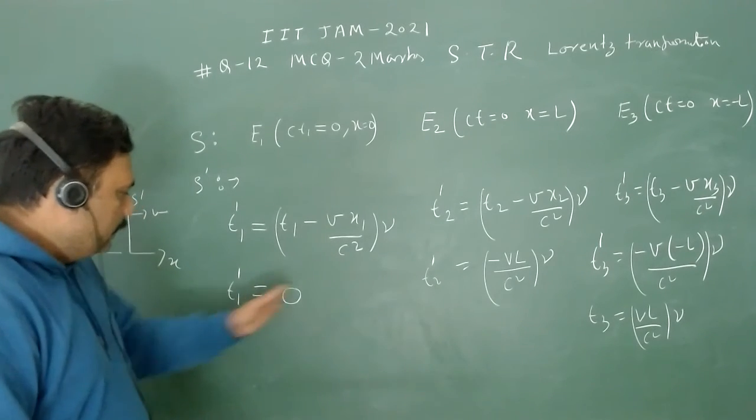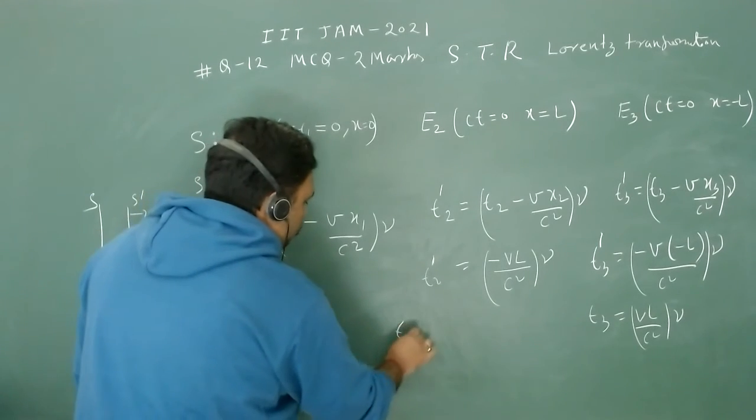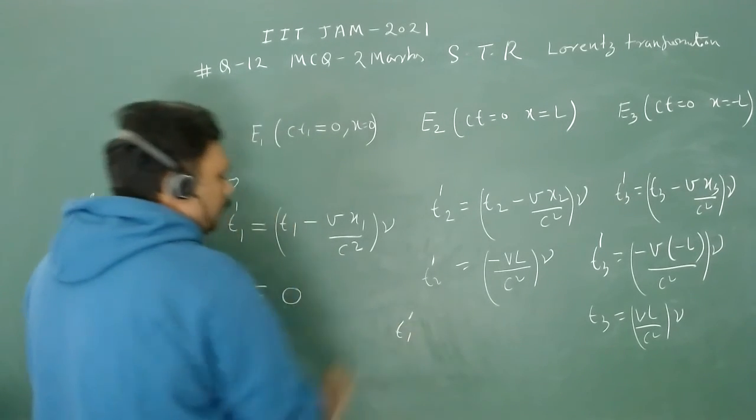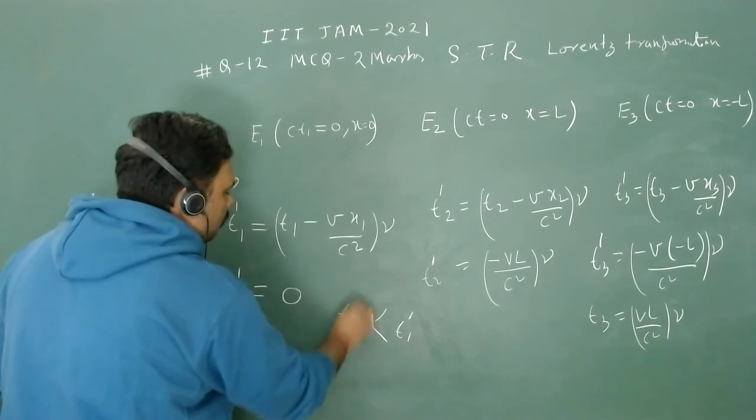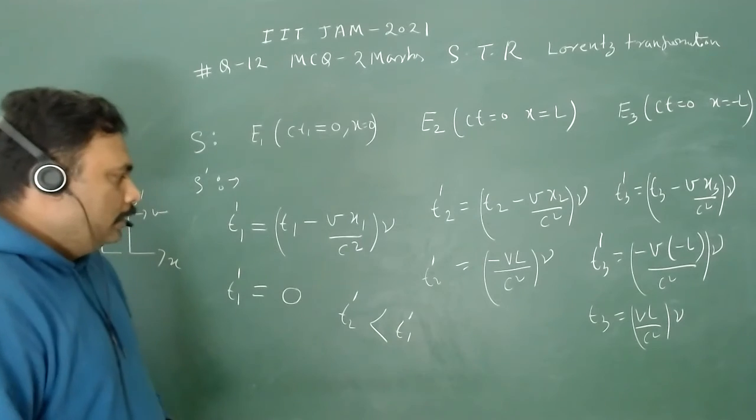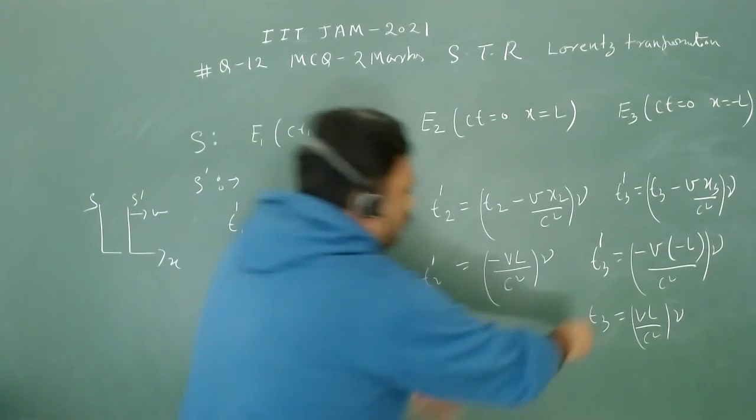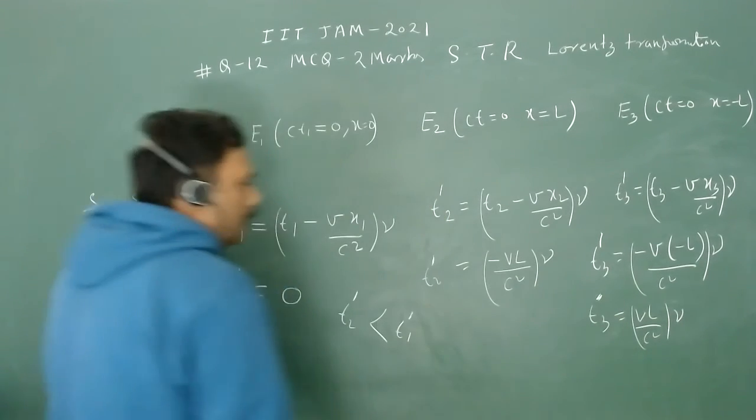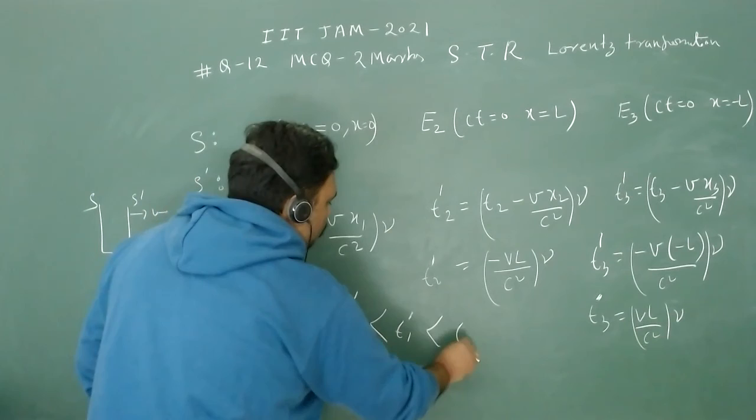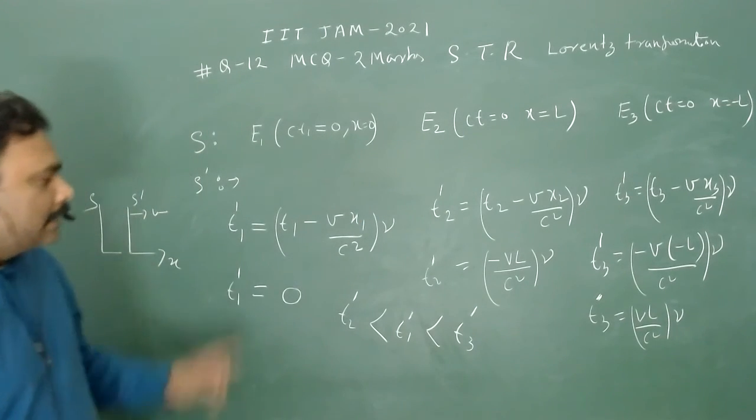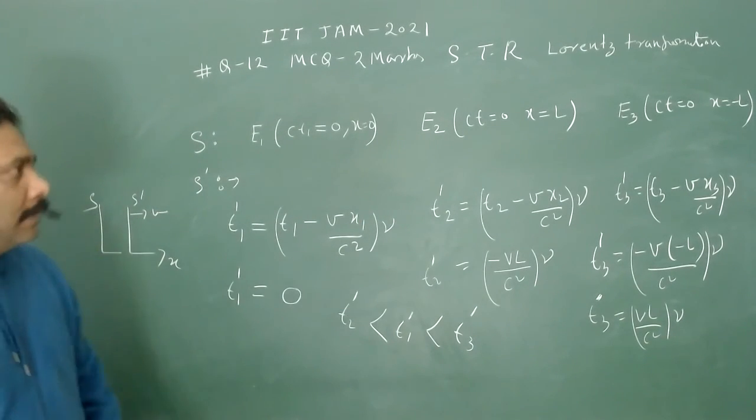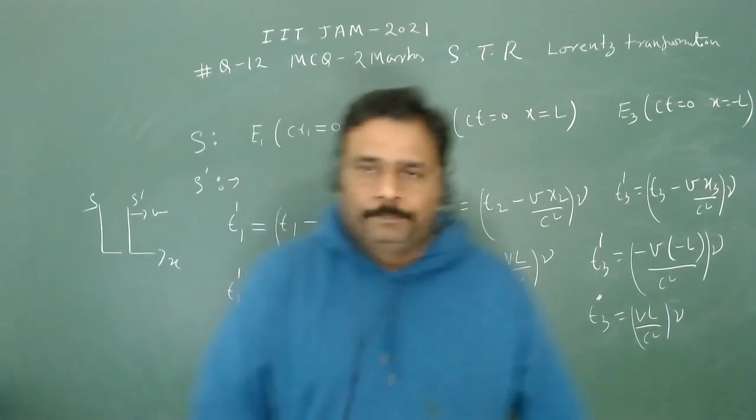If we are taking the reference at t1'=0, so t1' is at the middle, t2' will occur before t1', and t3' is going to occur after t1'. So this will be your answer for this beautiful problem. Thank you.